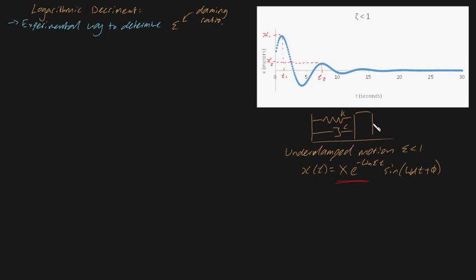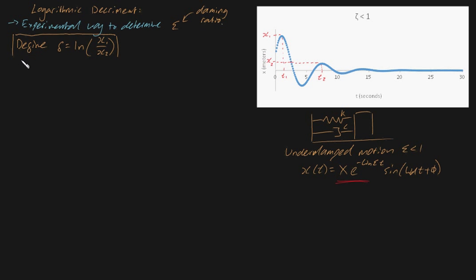So intuitively: your block is moving, and at its first peak that's x1, and at its second peak it's x2. And what I'm going to do is define delta as being the natural logarithm of x1 divided by x2. So far this is just a definition — we have no understanding of what properties delta holds at this point. Let's just go along with this definition and see what we get.